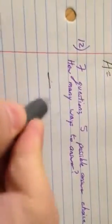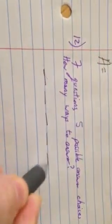So there are seven questions on this test. So there are seven events happening. The first question, second question, third, fourth, fifth, sixth, and seventh question.